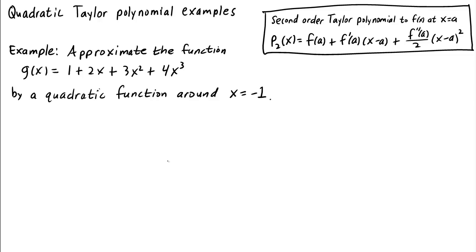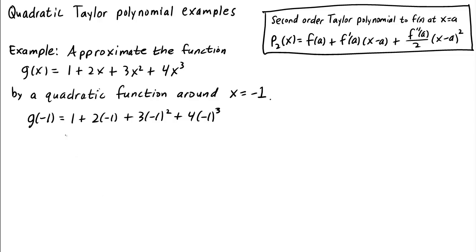According to the formula, we just need to calculate g, its first and second derivative, and then evaluate them at x equals negative 1. g of negative 1 is 1 plus 2 times negative 1 plus 3 times negative 1 squared plus 4 times negative 1 cubed, which is 1 minus 2 plus 3 minus 4, which is negative 2.